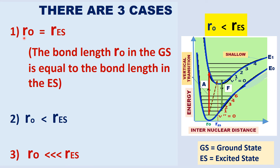Case one: the bond length R₀ in the ground state is equal to the bond length R_ES in the excited state. Case two: the bond length of the excited state is greater than the bond length in the ground state. Case three: the bond length is very much greater than R₀ in the highly excited state.